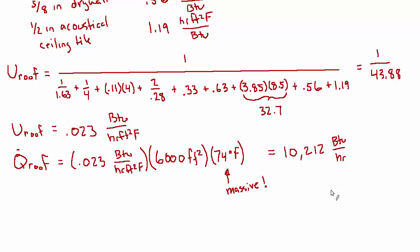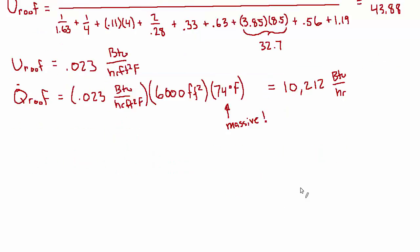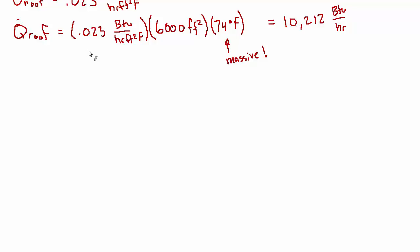So that gives us 10,212 BTU per hour. And that's in addition to what we already computed for the walls. So we've done the walls, we've done the roof, and now we're ready to look at the windows. And this is where it gets a little confusing. So when it comes to solar load through windows, the section I always flip to is 43.9.